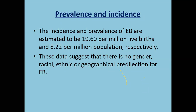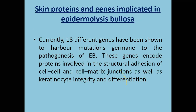The prevalence and incidence of EB is estimated as 19.60 per million live births and 8.22 per million population respectively. There is no gender, racial, ethnic, or geographical predilection of EB, but since it is autosomal dominant and recessive, EB is more prevalent in families where inter-family marriages are common. Currently 18 different genes have been shown to harbor mutations germane to the pathogenesis of EB. These genes encode proteins involved in the structural integrity of cell-cell and cell-matrix junctions, as well as keratinocyte integrity and differentiation.